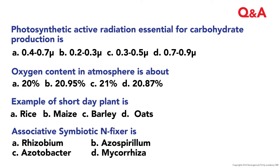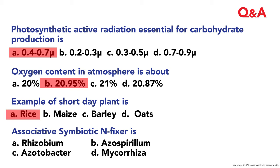Review questions: The photosynthetically active radiation essential for carbohydrate production is 400 to 700 nm. The oxygen content in the atmosphere is about 20.95 percent. The best example of a short day plant is rice. The associative symbiotic nitrogen fixer is Azospirillum.